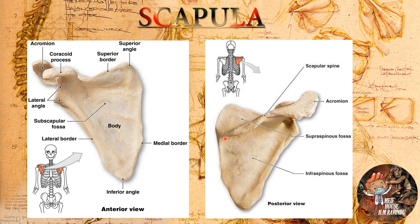In the posterior view we can see a distinct part called the scapula spine. The tip of the scapula spine is called the acromion, which can also be seen in the anterior view. The scapula also has a coracoid process.